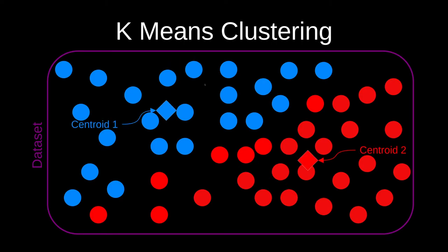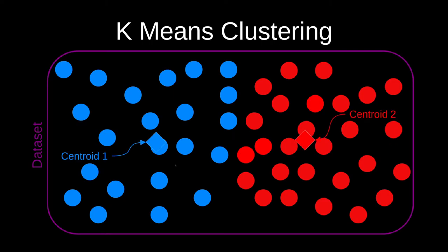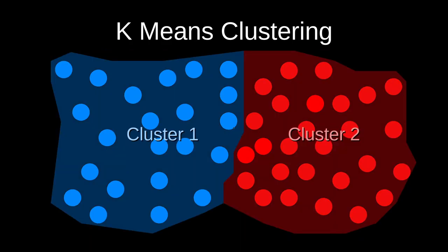Then we shift the centroids to be at the center of those data points in their respective classes. So now the blue centroid is at the center of all the blue points, and the red one is at the center of all the red points. Then we reclassify all the points based on which centroid is closest. We realign the centroids to be at the center of the data set. So now you can see we started off with a plain data set without any classifications, and we've formed two clusters that we can use to classify any new data — determining whether it's in class 1 or class 2.